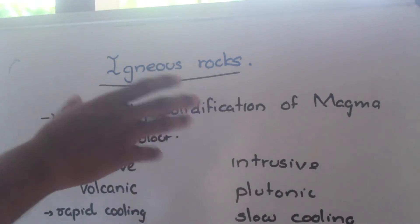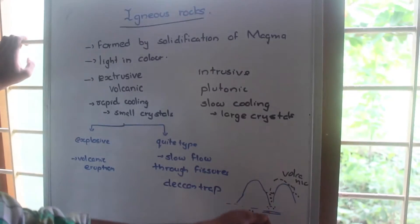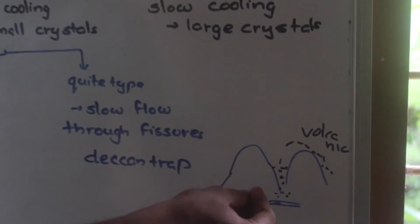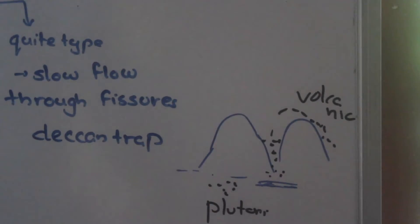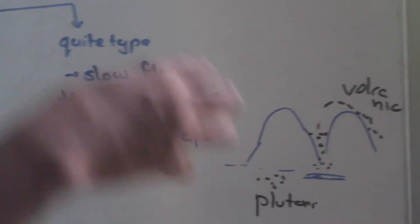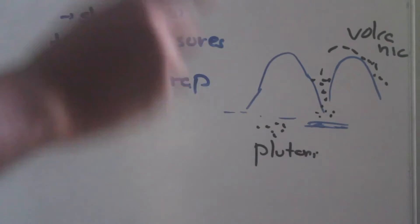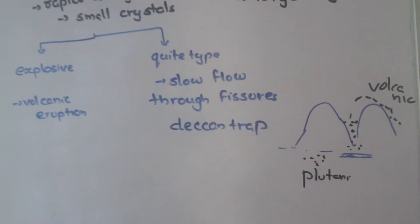Now we will discuss igneous rock for getting the concept. We are looking at the figure of a volcano. There is a vent through which magma comes out. This magma is actually the molten rock in the interior of the earth. Because of high temperature and pressure, the rock will be in a molten state, and due to solidification of this magma, the igneous rocks are formed.